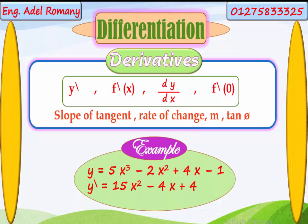Let's see an example. If y equals 5x to the power of 3 minus 2x to the power of 2 plus 4x minus 1, and we need to find y dash. We can see y equals four terms. We differentiate each term from the main function to get y dash. First term: 5x to the power of 3 — how to make the first derivative?